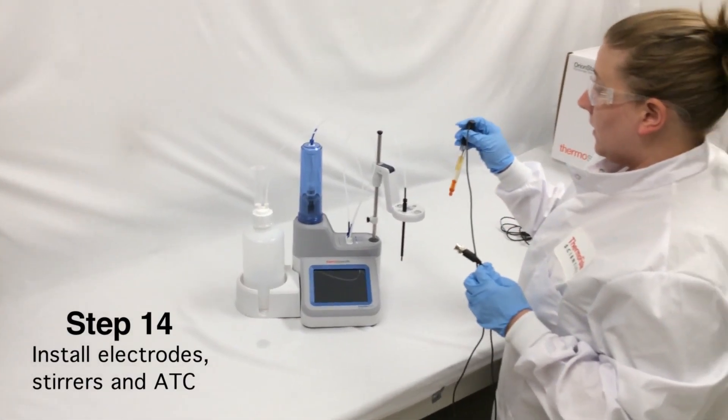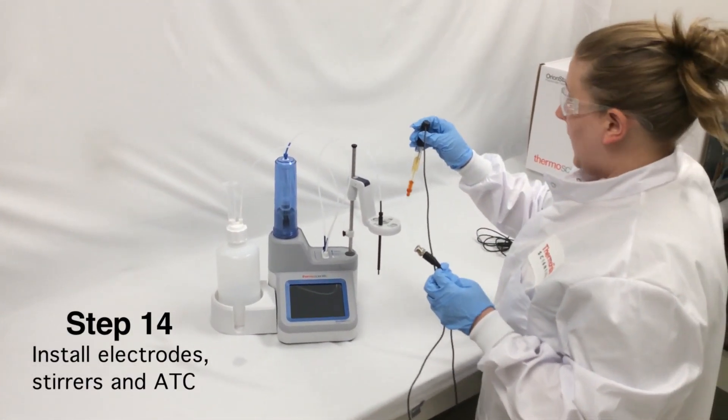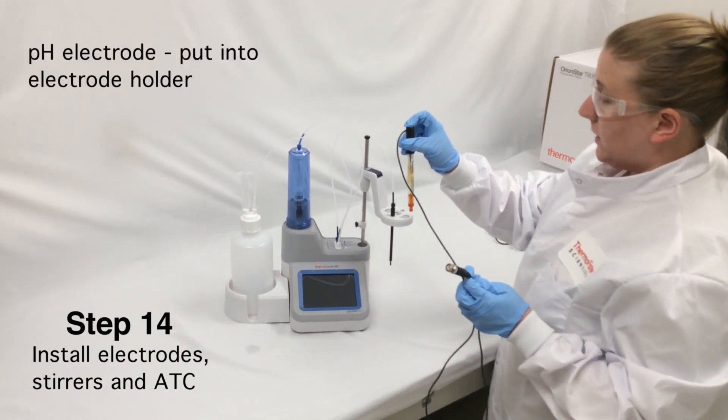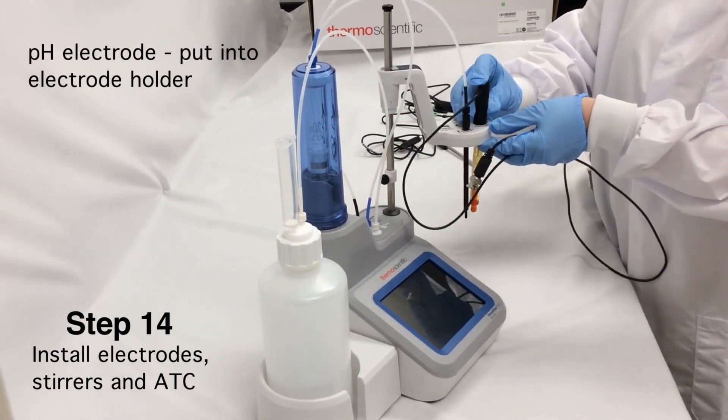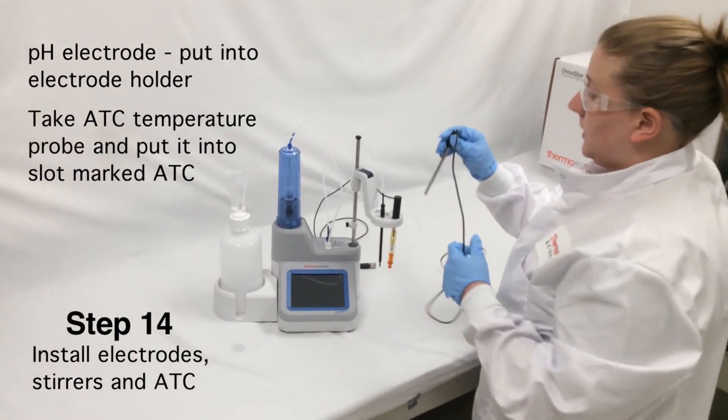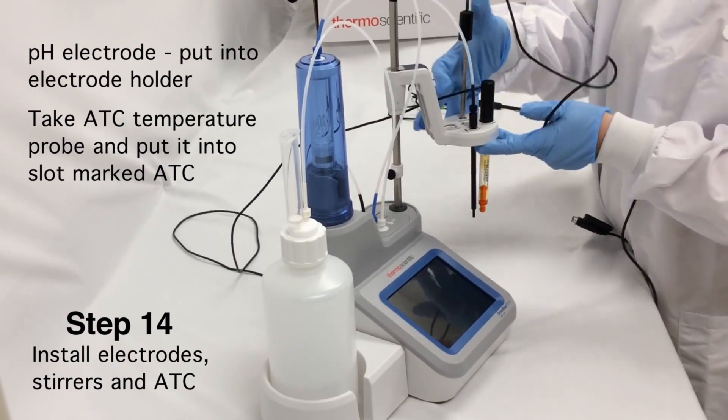Install the electrodes, stirrers, and ATC. Take the pH electrode and put it into the electrode holder. Put the ATC temperature probe in the slot marked ATC.